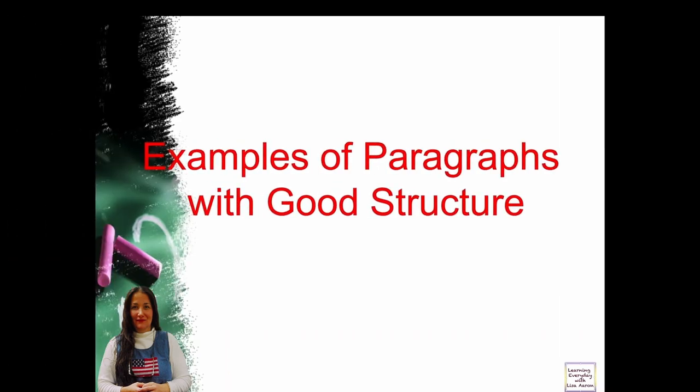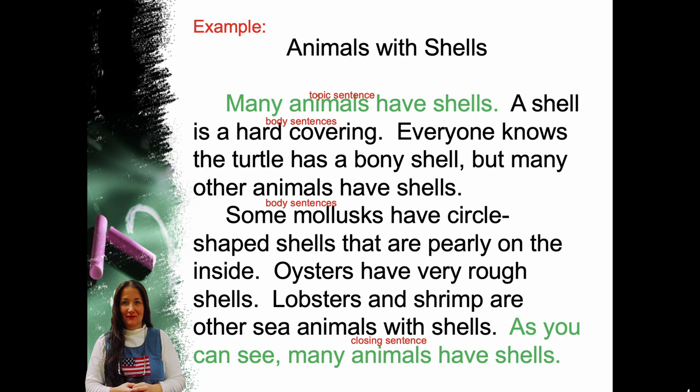Examples of paragraphs with good structure. The title is 'Animals with Shells.' 'Many animals have shells' — that's our topic sentence. 'A shell is a hard covering' — that's part of our body sentences. 'Everyone knows the turtle has a bony shell, but many other animals have shells. Some mollusks have circle-shaped shells that are pearly on the inside. Oysters have very rough shells. Lobsters and shrimp are other sea animals with shells.' 'As you can see, many animals have shells' — that is our closing sentence.